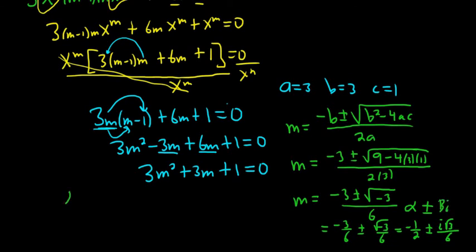So in this case, alpha is negative 1 half and beta is the square root of 3 over 6.